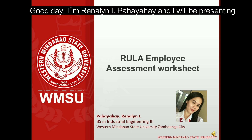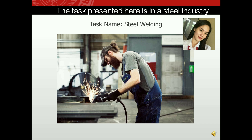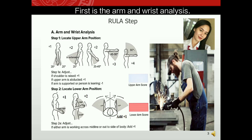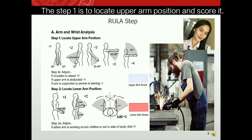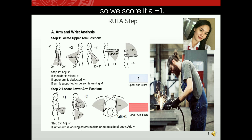This is the RULA Employee Assessment Worksheet. The task presented is in a steel industry where a worker is welding steel. Step one is to locate the upper arm position. The worker's upper arm is hanging at less than 20 degrees forward, so we score it a plus one.